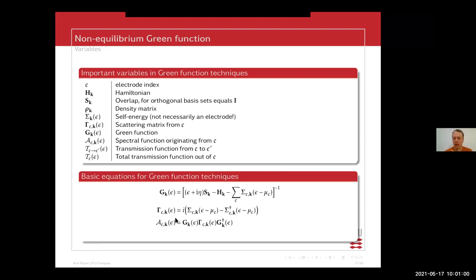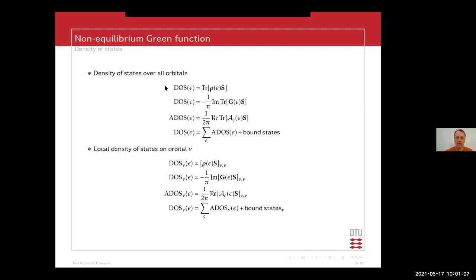From these you can calculate quite a bit of physical properties. The density of states can be expressed in various ways. In the top panel you have the total density of states — that's your trace of your density matrix times S. This may also be expressed in the Green's function formalism. There is a direct link between your Green's function and your density matrix; you can calculate your density matrix from your Green's function, and that's basically what TranSIESTA does. TB-trans calculates your density of states like this.